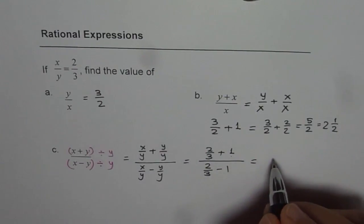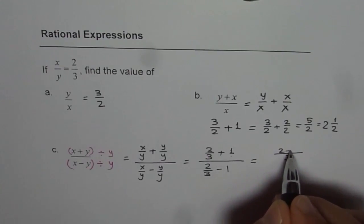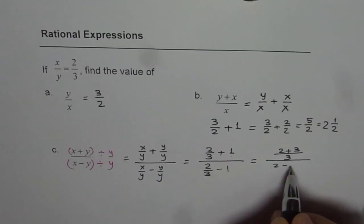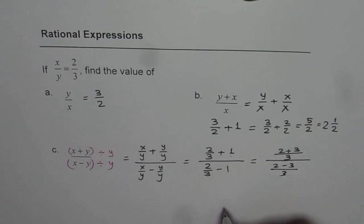So we can take 3 as a common denominator. We get 2 plus 3 in the numerator, divided by 2 minus 3, over 3.